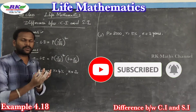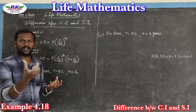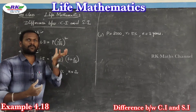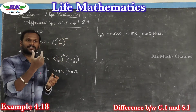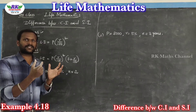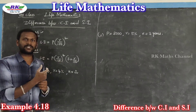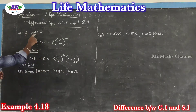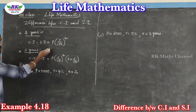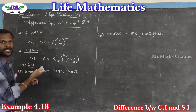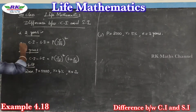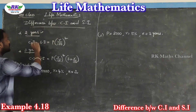We have a problem where we can find the Compound Interest and Simple Interest. Compound Interest depends on compounding, and Simple Interest is a little less. So, what is the difference between Compound Interest and Simple Interest?